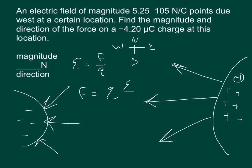So the electric field is 5.25 times 10 to the 5th, and we can multiply that by the charge, which is the absolute value of the charge, which is 4.2 times 10 to the negative 6th.